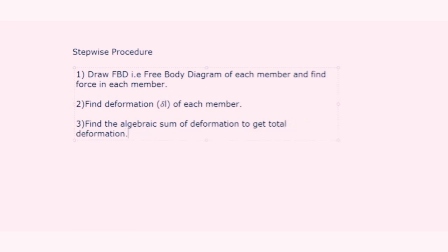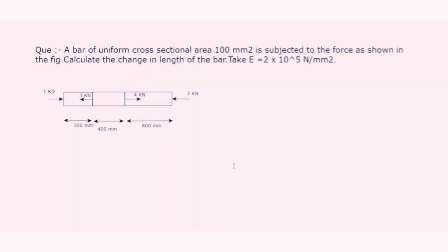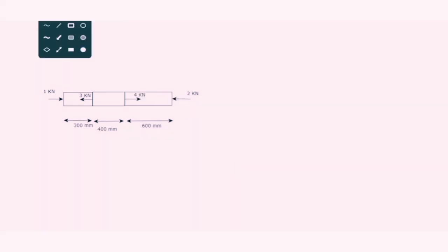Here we have a question: a bar of uniform cross-sectional area 100 mm² is subjected to forces as shown in the figure. Calculate the change in length of the bar. Take E equal to 2 × 10⁵ N/mm². The change in length is nothing but deformation, and E is the modulus of elasticity.